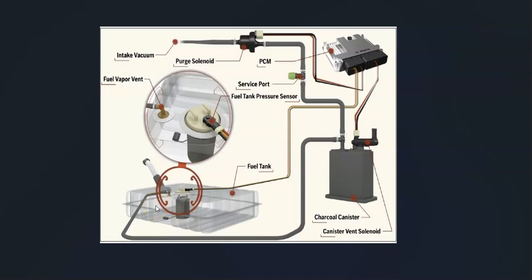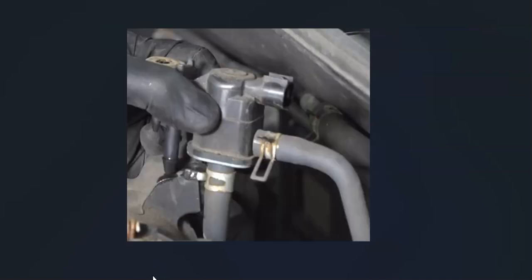If there's no EVAP leak, the next thing to check is the purge valve. Even though a faulty purge valve usually gives other codes, it is possible it's not working correctly and causing problems. There's a quick, easy way to test the purge valve — I made a video on that, I'll put a link below. The purge valve is located inside the engine compartment on top of the engine, with two hoses and a wiring harness.